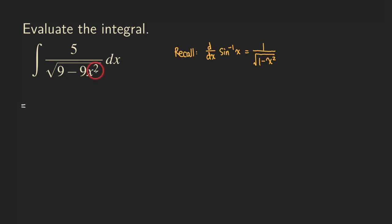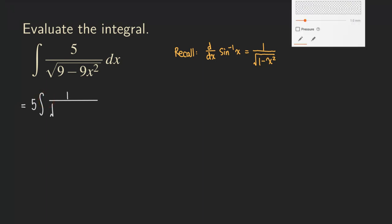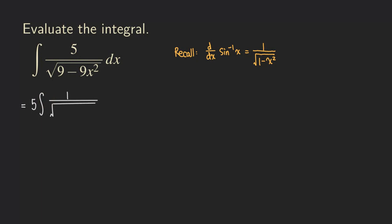First, we know that the 5 can be taken outside the integral because that's really just the 5 multiplying 1 over the radical. So we don't need to keep the 5 inside the integral. We have 5 times, and then in the numerator it becomes just a 1, and then the square root of 9 minus 9x squared, and then there's the dx.